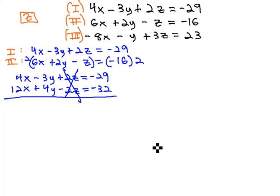Now, we have opposites in front of the z's like we wanted, and we get 16x plus y equals negative 61. This is our equation we'll label A, so that we can come back to it later, after we eliminate z a second time.